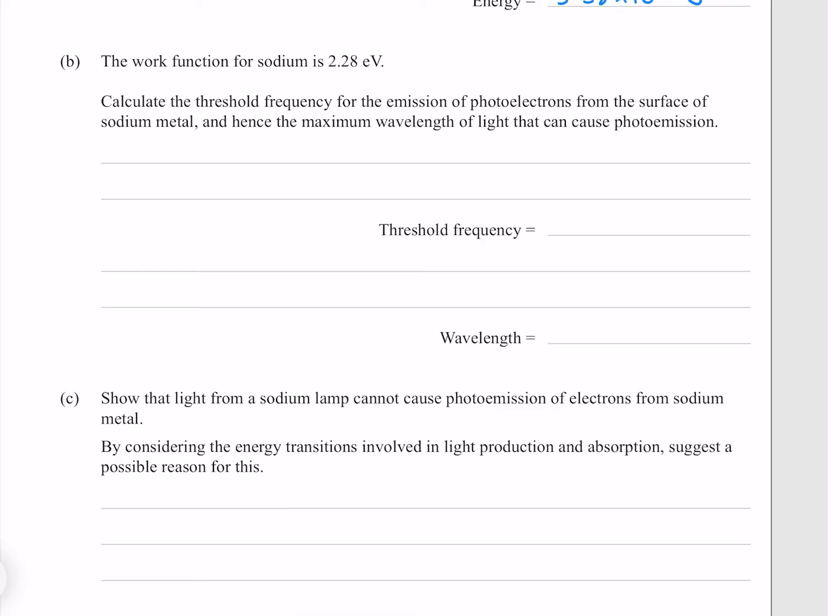The work function for sodium is 2.28 electron volts. Calculate the threshold frequency for the emission of photoelectrons from the surface of sodium metal. To find the threshold frequency, we need to find the frequency of a photon with this amount of energy, where we know that the photon energy is Planck's constant times the frequency. Rearranging that for frequency by dividing both sides by Planck's constant, we can convert 2.28 electron volts into joules by multiplying it by the charge of an electron, which gives me 5.50 times 10 to the 14 hertz.